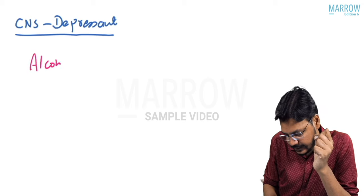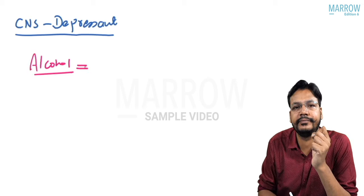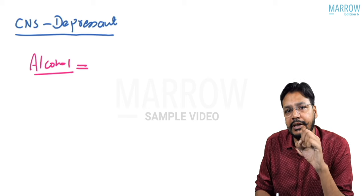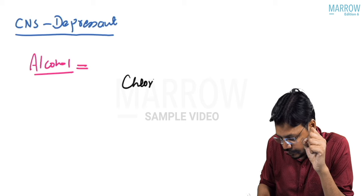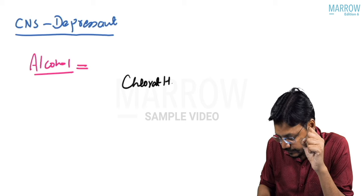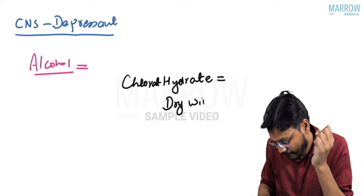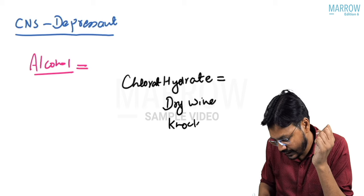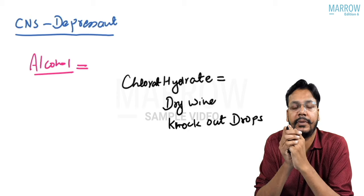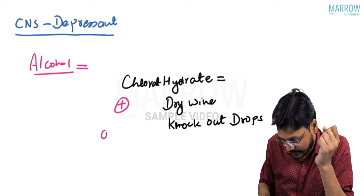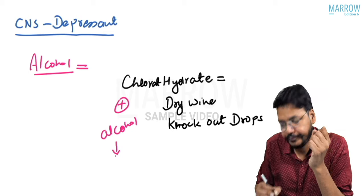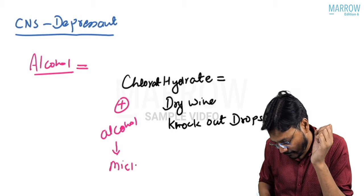We are coming to a very important topic: CNS Depressants. In CNS Depressants, the first topic is alcohol. Now we are coming to important terminology. What is chloral hydrate? Chloral hydrate is dry wine, also known as knockout drops. The combination of chloral hydrate with alcohol — we use the word 'Mickey Finn.'